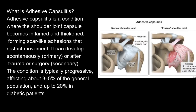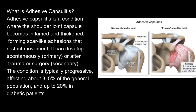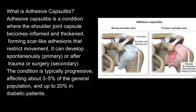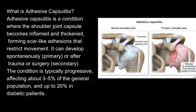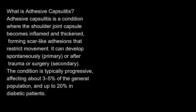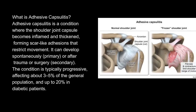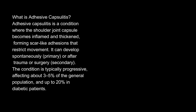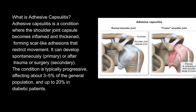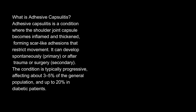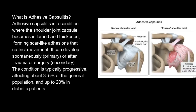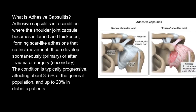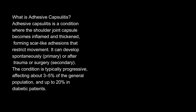What is adhesive capsulitis? Adhesive capsulitis is a condition where the shoulder joint capsule becomes inflamed and thickened, forming scar-like adhesions that restrict movement. It can develop spontaneously (primary) or after trauma or surgery (secondary). The condition is typically progressive, affecting about 3–5% of the general population and up to 20% in diabetic patients.